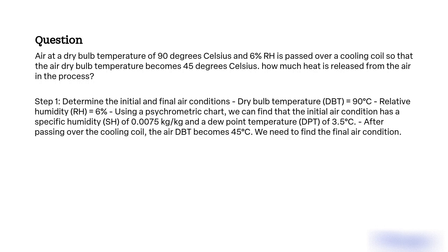Step 1: Determine the initial and final air conditions. Dry bulb temperature DBT equals 90°C, relative humidity RH equals 6%. Using a psychrometric chart, we find that the initial air condition has a specific humidity SH of 0.0075 kg/kg and a dew point temperature DPT of 35°C. After passing over the cooling coil, the air DBT becomes 45°C. We need to find the final air condition.